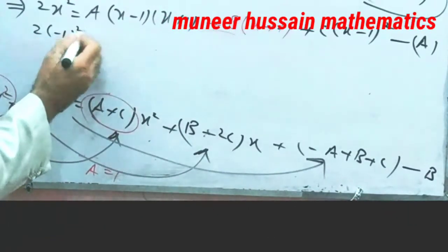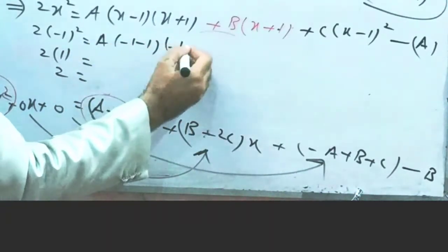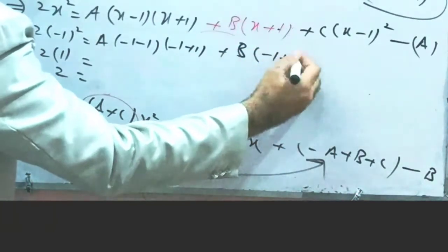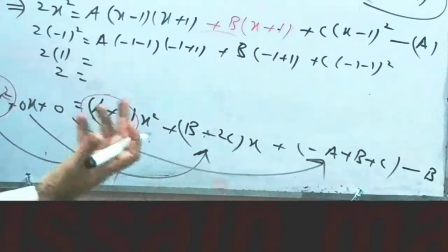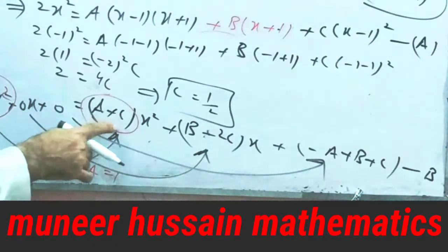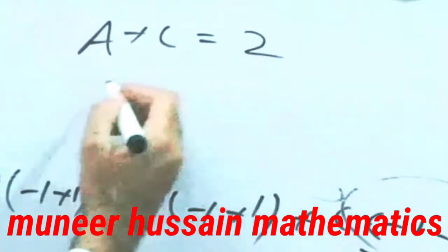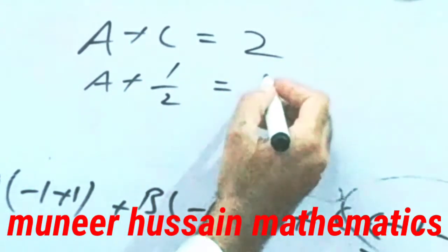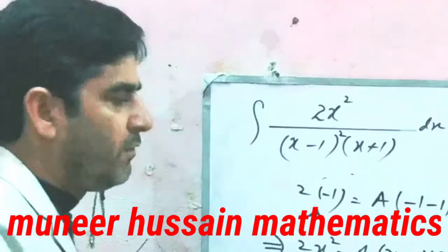Now x equals minus 1: 2 into (minus 1) squared equals 2. Here a into (minus 1 minus 1)(minus 1 plus 1) is 0, b into (minus 1 plus 1) is 0, and c into (minus 1 minus 1) squared equals (minus 2) squared equals 4. So 4c equals 2, meaning c equals 1/2. Now for a, comparing the coefficient of x squared: a plus c equals 2, so a equals 2 minus 1/2 equals 3/2. Now we have all values of a, b and c.